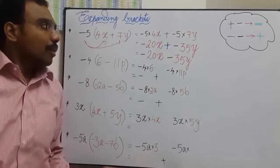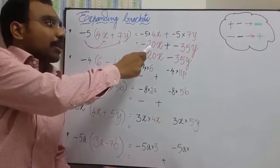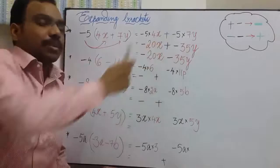So minus 5 times 4x and minus 5 times 7y. So minus 20x and 5 times 7 is 35. Negative into positive is negative, so minus 35y.